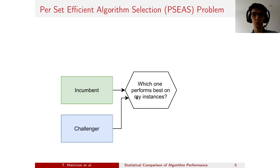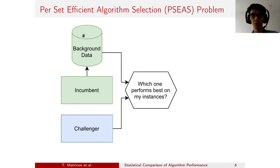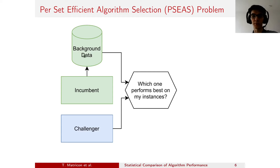We have the incumbent algorithm and the challenger algorithm that we plug into our method. Actually, we do not exactly plug them directly — we plug background data. We add the incumbent running time to the background data. That background data contains features, which are often easily computable and used in algorithm selection or configuration. We also have runtime data of other algorithms, available because when doing a comparison like this, there's often a competition and we can use the competition data as background data.